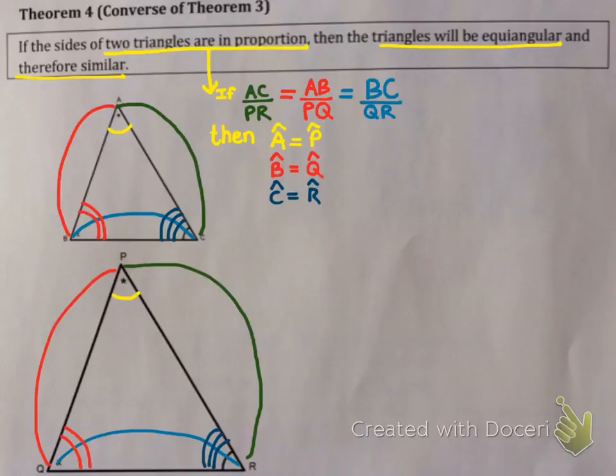Now this is only true in triangles. In any other shape, you would have to prove that the shapes are equiangular and the sides are in proportion. They don't necessarily come as a unit. So this is only true in triangles. So this would mean that ABC is similar to triangle PQR. So this is what the theorem says.